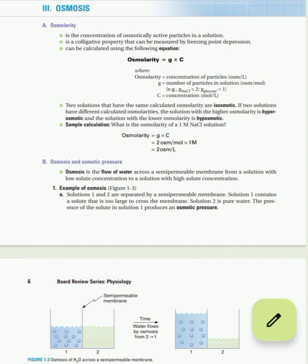Depending upon the osmolarity, we classify solutions into three types. If two solutions have the same osmolarity, we call it iso-osmotic. If they have different osmolarity, the solution with higher osmolarity is hyper-osmotic, and the solution with lower osmolarity is hypo-osmotic.